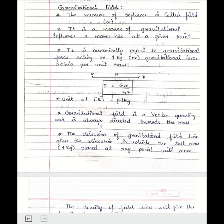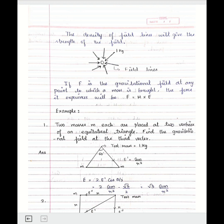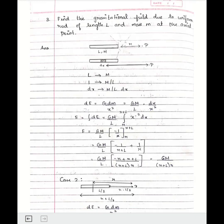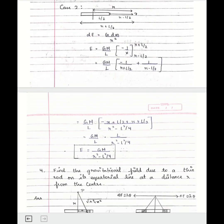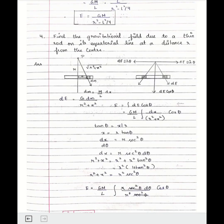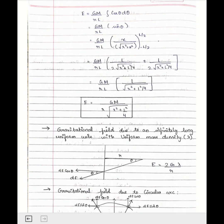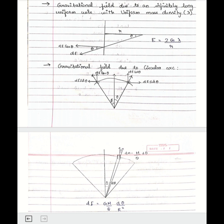Gravitational Field. Gravitational Field due to an infinitely long uniform wire. Gravitational Field due to uniform circular arc.